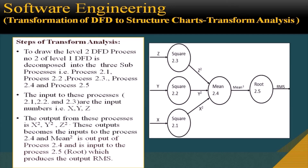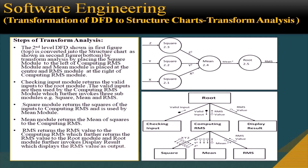To draw the level 2 DFD, process 2 from the level 1 DFD is decomposed into sub-processes: process 2.1, 2.2, 2.3, 2.4, and 2.5. The inputs to processes 2.1, 2.2, and 2.3 are the input numbers x, y, and z respectively. The outputs are x², y², and z². These become inputs to process 2.4, whose output is the mean square, which feeds into process 2.5 (root), producing the final RMS value.